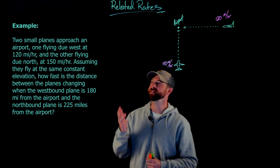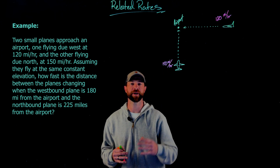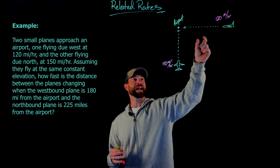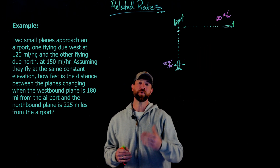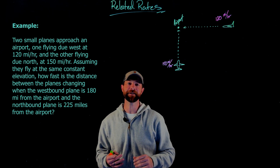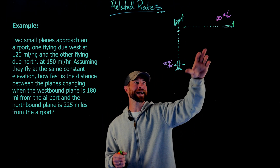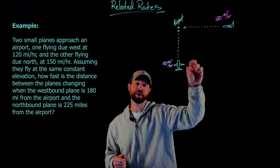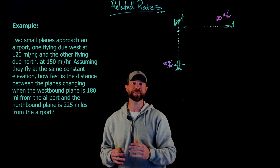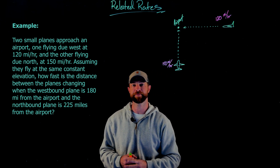In our first example, we're given this situation. We have two planes approaching a small airport. One plane is approaching from westbound at 120 miles per hour, and another plane is headed northbound towards the airport at 150 miles per hour. The question we're being asked is how fast is the distance between those two planes changing when the first plane is 180 miles from the airport and the second plane is 225 miles from the airport.